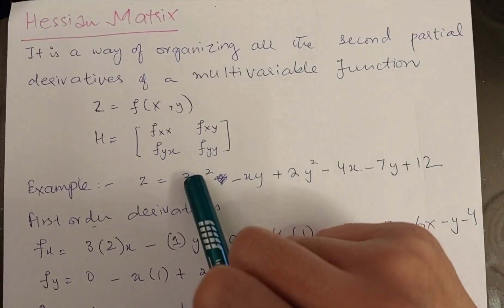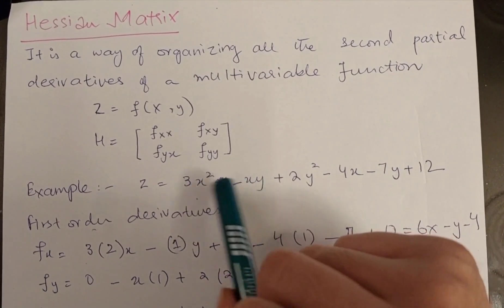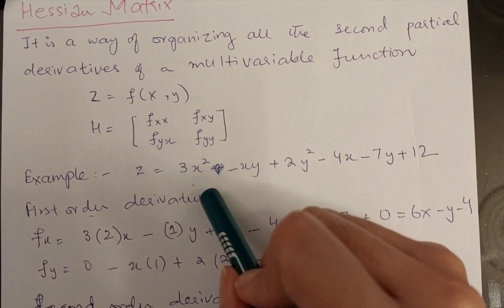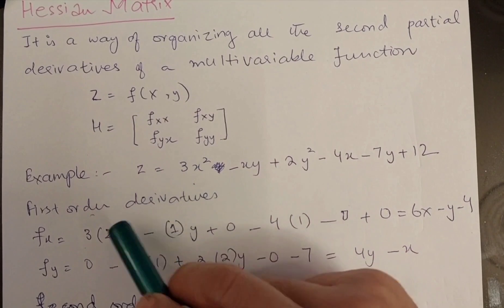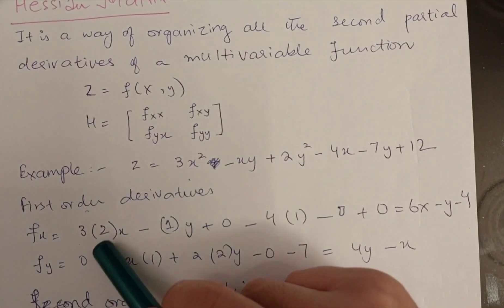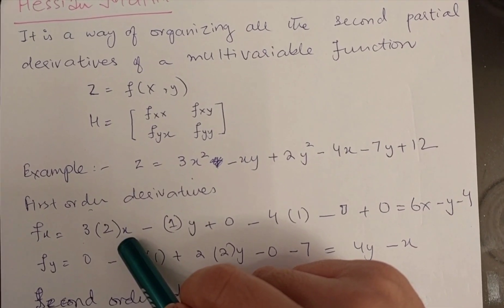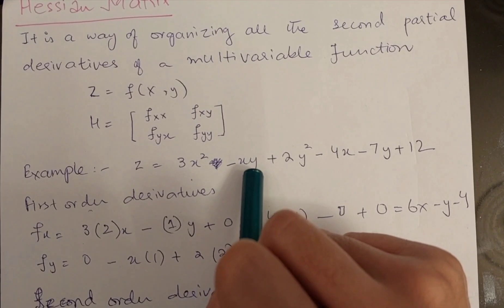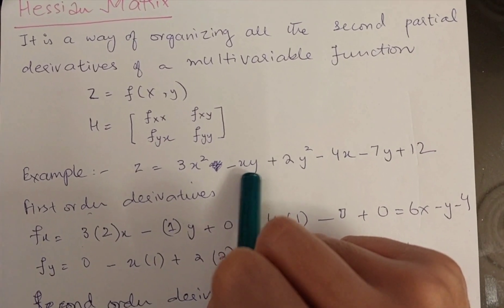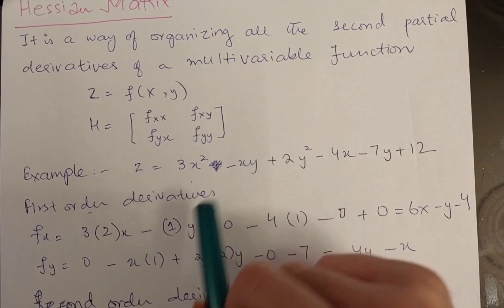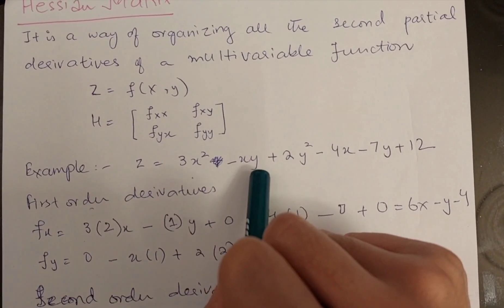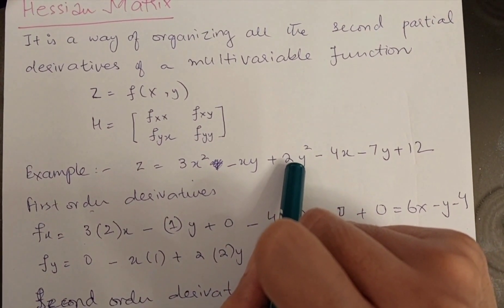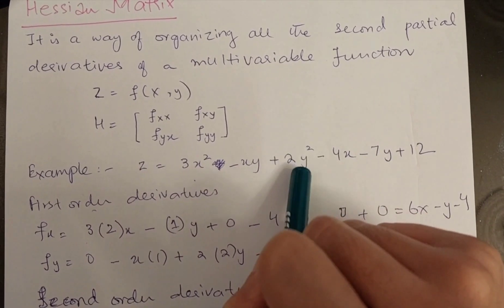Let's consider an example. There is a function defined in x and y. First, I will calculate the first-order derivatives. The first-order derivative with respect to x: the 3 comes as is, the power of 2 comes down to multiply, and x reduces in power by minus 1, so x squared becomes x. Then for the xy term, when I take the derivative with respect to x, the derivative of x with respect to x is 1, so I place 1 here and y simply behaves as a constant or coefficient. For the next term, there is no x.